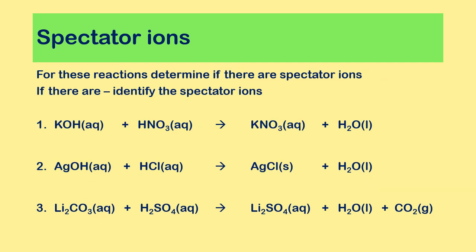For the first question: KOH(aq) + HNO₃(aq) → KNO₃(aq) + H₂O(l). We have aqueous before and after the arrow — no solid is produced, so this is not a precipitation reaction. That means we do have spectator ions. The spectator ions are K⁺, found in KOH on the left and KNO₃ on the right, and NO₃⁻, found in HNO₃ on the left and in KNO₃ on the right.